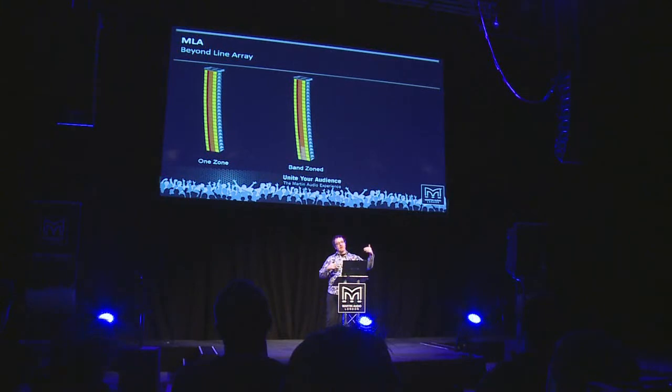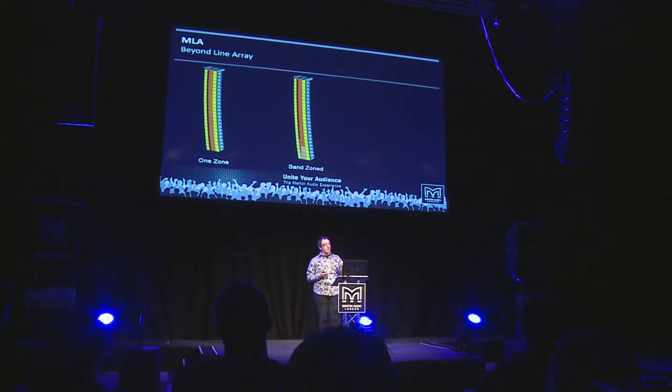So you can actually try and balance the SPL from front to back. You can deal with air absorption losses over distance, all those kinds of things. And we ended up with three zones for the system.